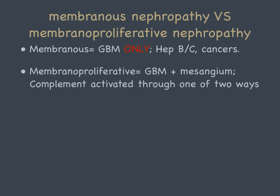Membranoproliferative, on the other hand, involves the GBM and the mesangium. The way I remember this is that since there are two areas involved, they complement each other — because on the membranous one there's only one area, but here there are two. And indeed, complement is implicated in every kind of membranoproliferative glomerulonephritis.